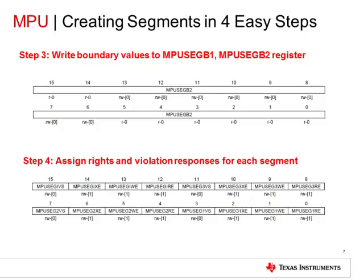The third step is to write these values to the MPU SEG register. Then we assign writes and violation responses for each protected block. For example, the first two blocks can be read and execute with write disabled — this is suitable for code memory. The last block can be read only with write and execute disabled, which is suitable for constant data. Once you've set the protection on the segments, you can configure what happens when a violation occurs: either a non-maskable interrupt or a reset. If you set the MPU lock bit, you can lock the MPU settings until a BOR occurs so that the access protections cannot be accidentally changed.